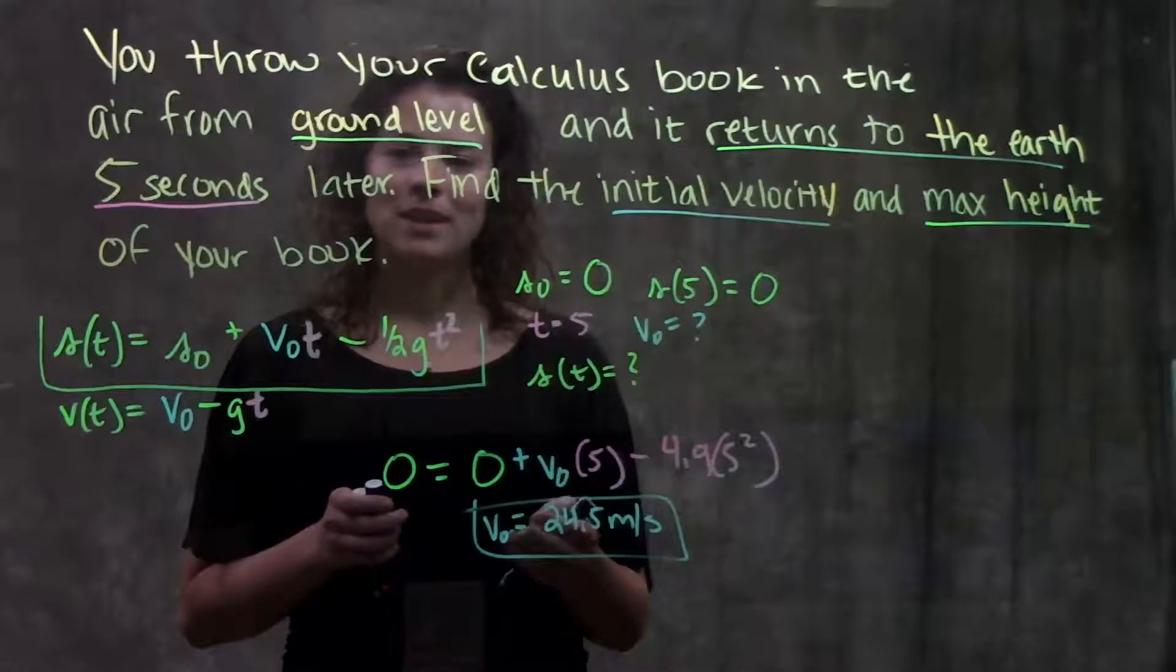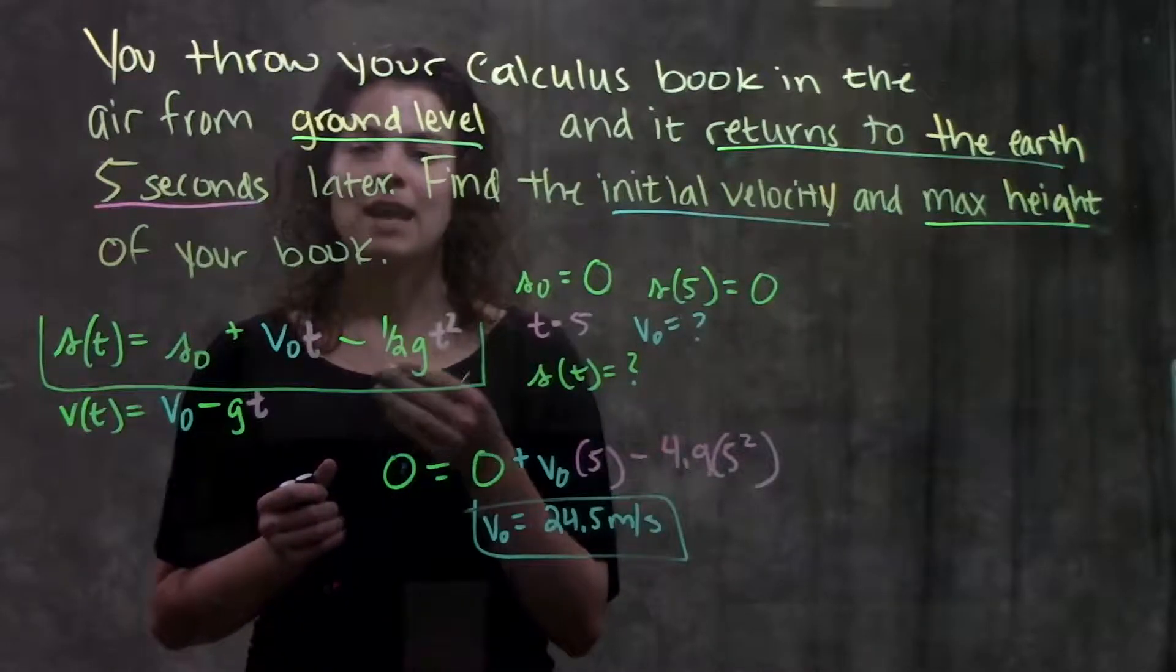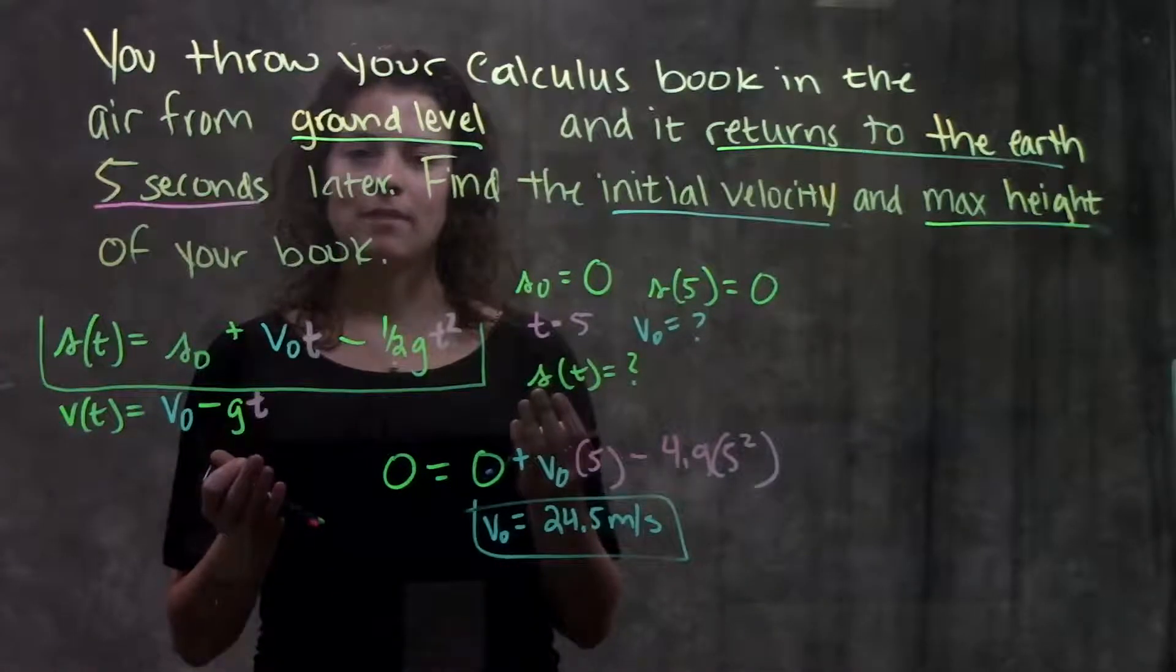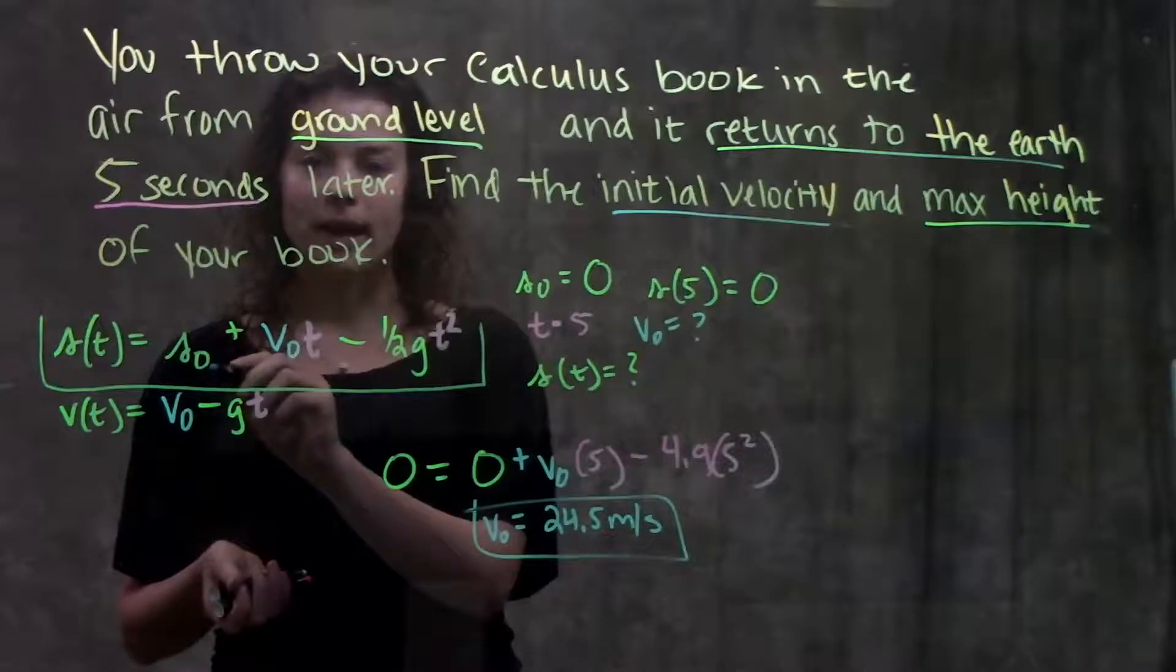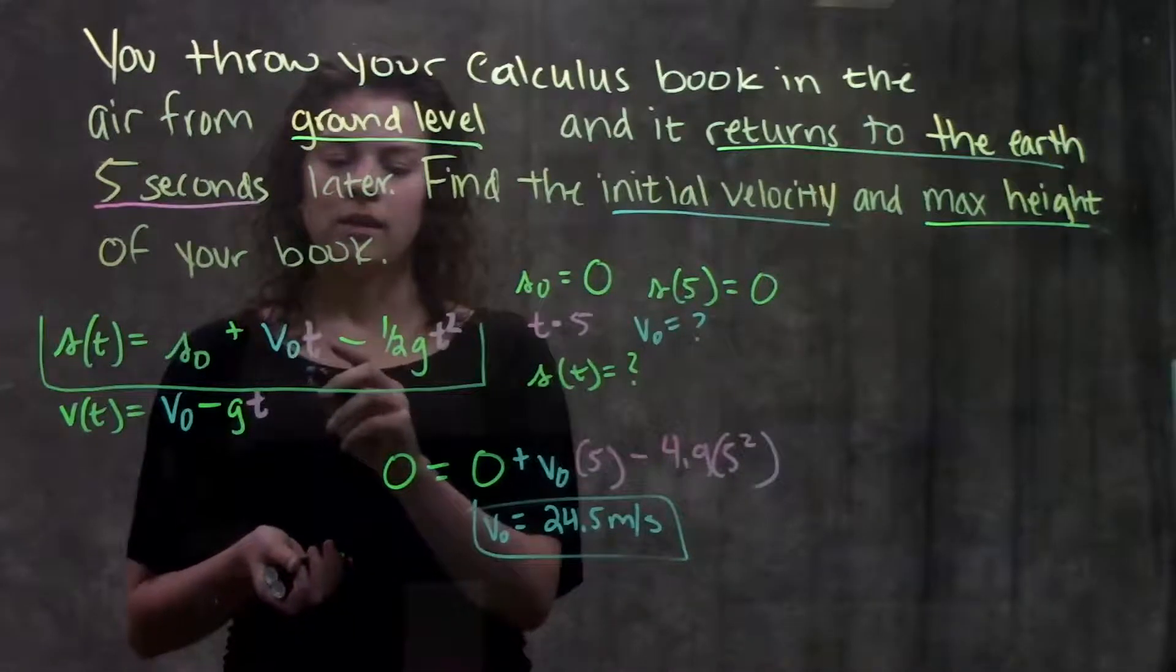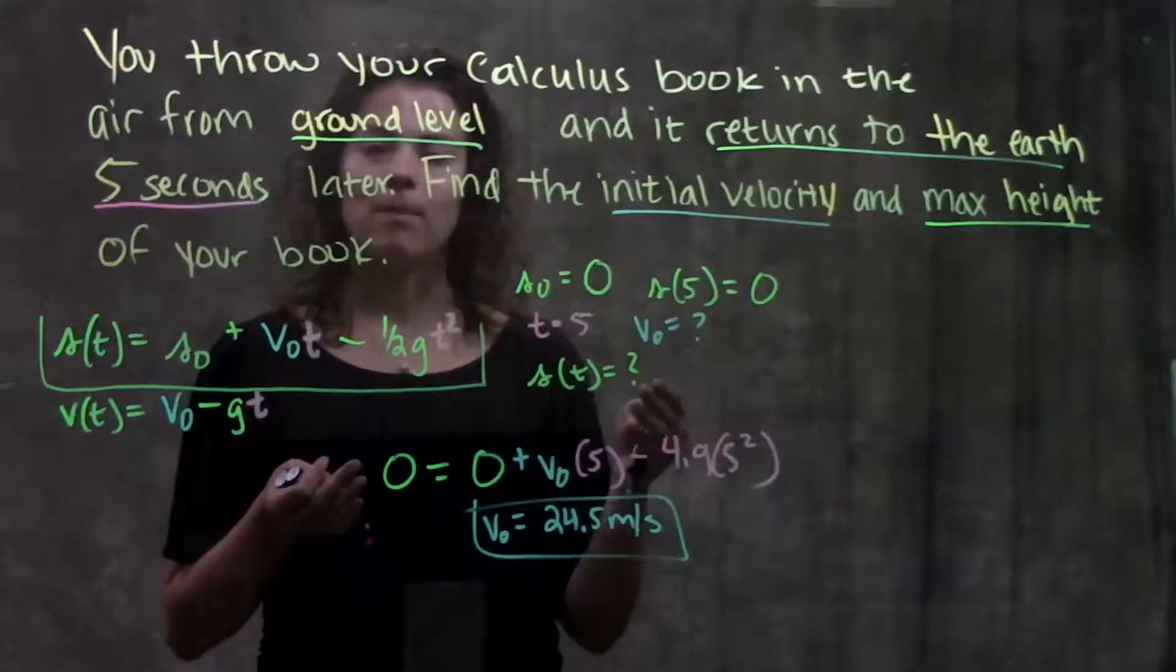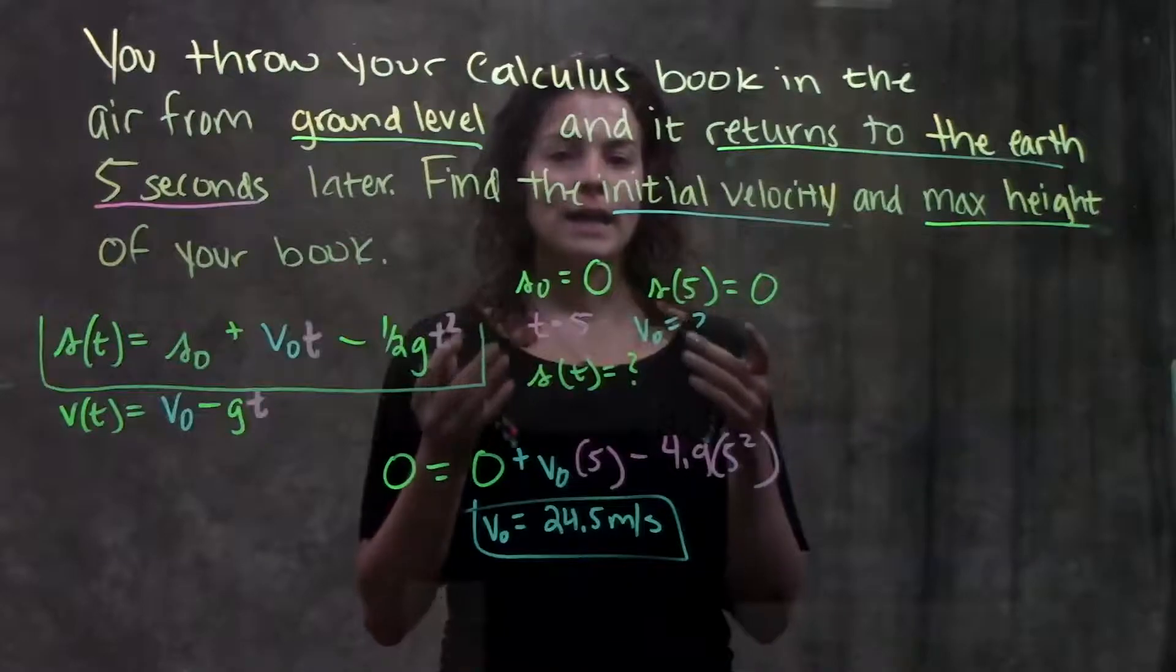So now I have a value for v₀ and now I can go over here try to solve for my maximum height s(t). Alright going back to my function let me see if I have enough information now to solve for my s(t). I know my s₀, I know my v₀, I know one half g, but I still don't know the time at which I have my maximum height. They don't tell us this in the problem but you kind of have to infer it.